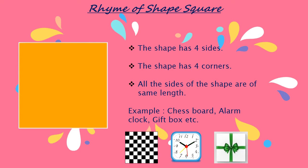Now I will recite the rhyme of shape square. Are you ready? This is a square shape, look and you will see — it has four corners and four sides, count them: one, two, three, and four. This is a square shape, look and you will see — it has four corners and four sides, count them: one, two, three, and four. Isn't it an interesting rhyme, children?